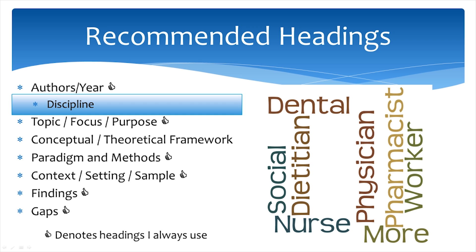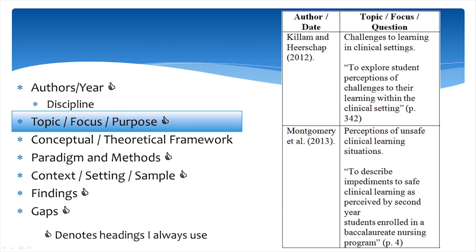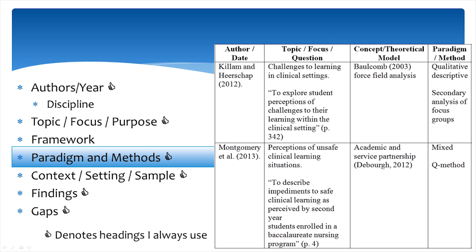Remember to keep your table as concise as possible. Include the topic or focus of the study as well as the research purpose or research question in the next column. The focus of the article is absolutely critical to your summary table. Remember to be concise and specific. I also like to quote the purpose of the article here. Noting the conceptual or theoretical framework will help to inform you of the perspective of the researchers. You may also notice common ones that you could consider for your future research proposal.